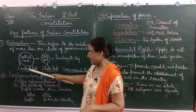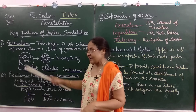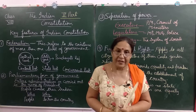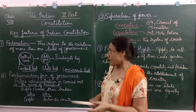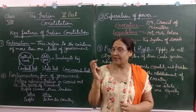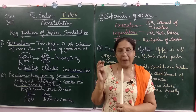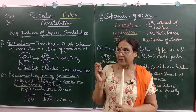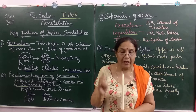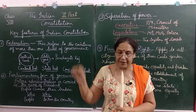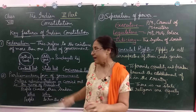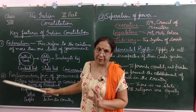For example, there is the Union List. Only the central government can make laws on the Union List — subjects related to the entire country, such as foreign affairs, foreign relations, banking, railways, communication, and defence. Because these are related to the whole country, these powers are given to the central government.